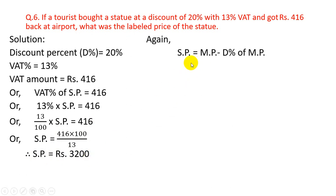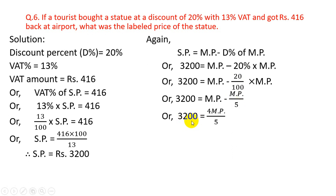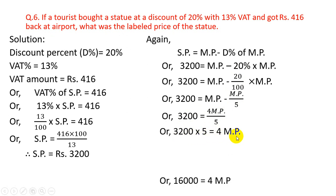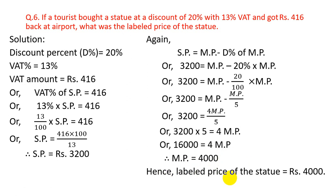SP = MP − discount% of MP. So 3200 = MP − 20% of MP = MP − MP/5 = 4MP/5. Cross multiplying: 3200 × 5 = 4MP, so 16000 = 4MP, therefore MP = Rs.4000. Hence the labeled price of the statue is Rs.4000.